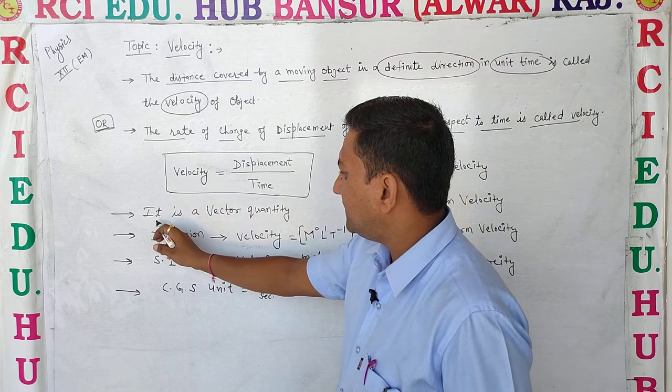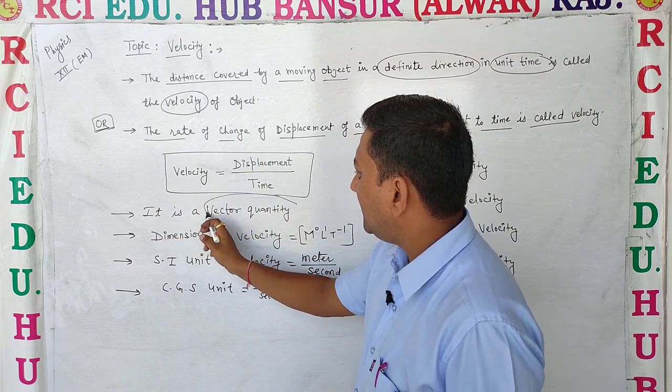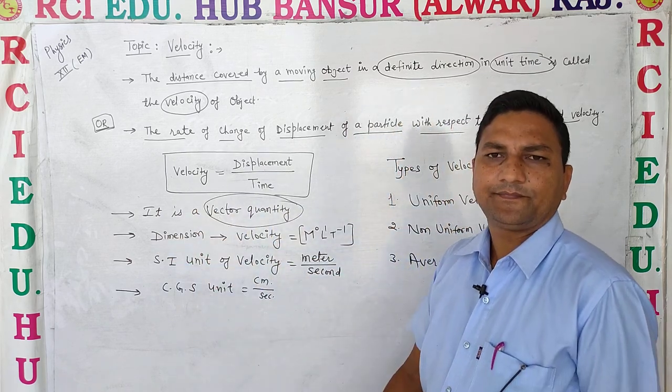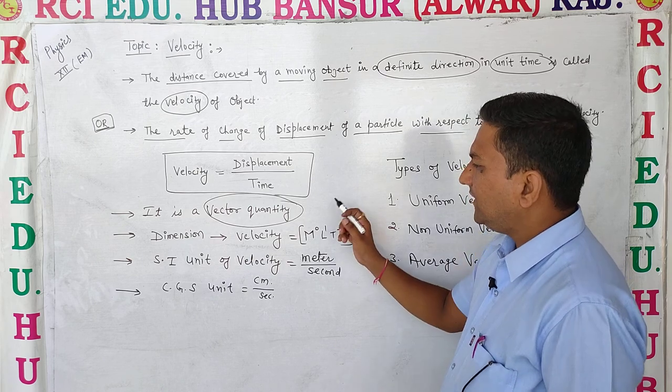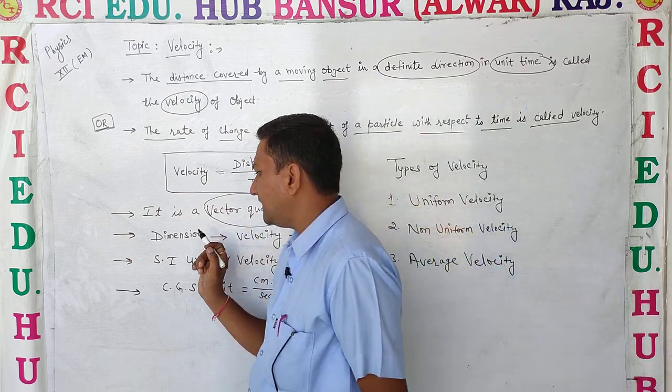So, Velocity information: it is a vector quantity. Vector quantity means it has a direction.